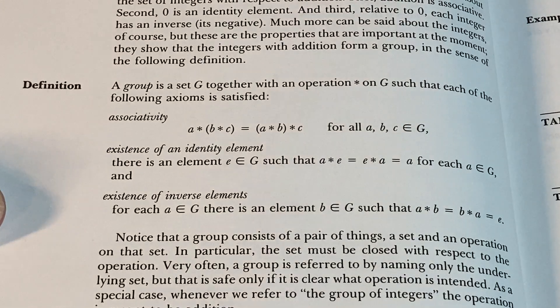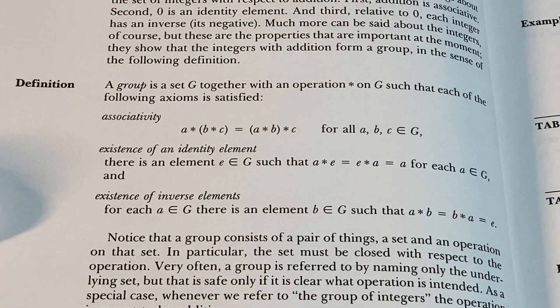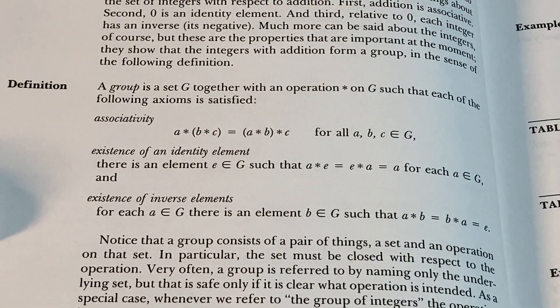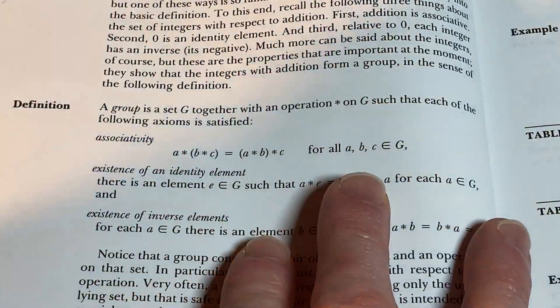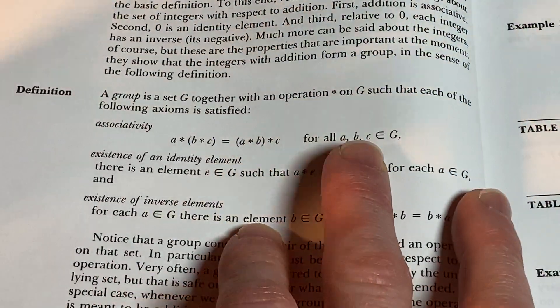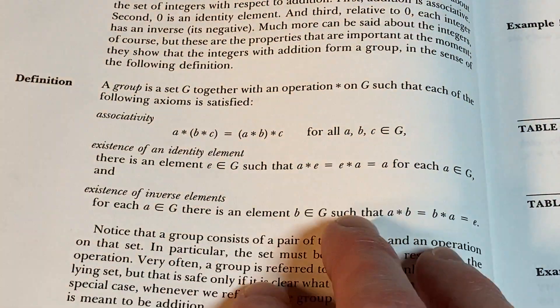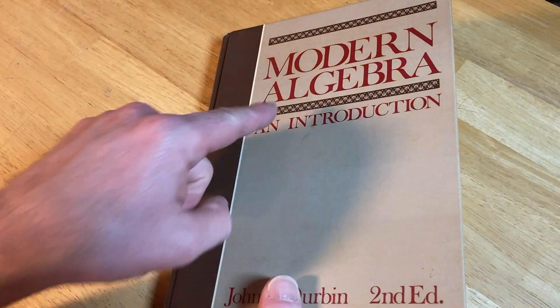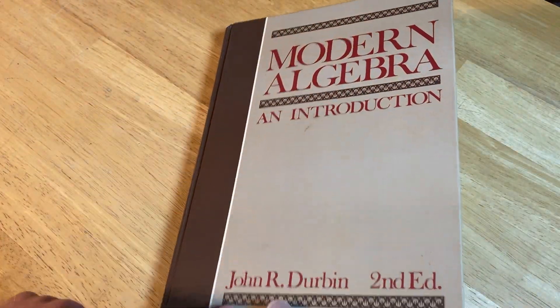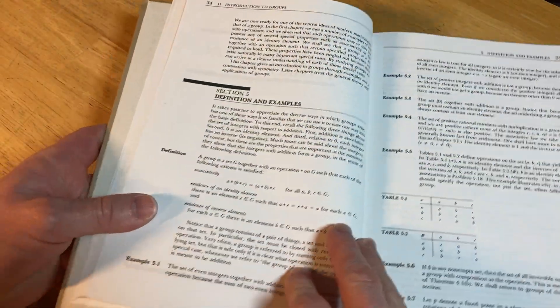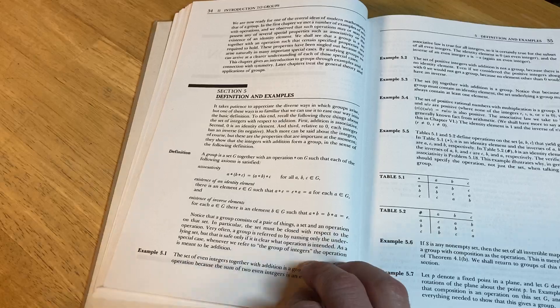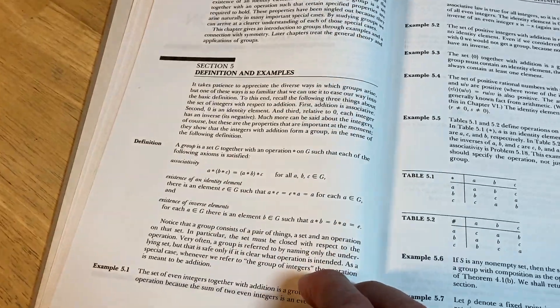Hello, in this video we're just going to take a quick look at the definition of a group. The book I have here is a great book, by the way, and I'll try to remember to leave a link in the description. It is Modern Algebra by John R. Durbin. You can use this book for self-study and to learn abstract algebra.